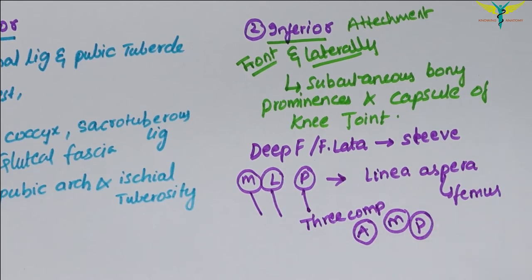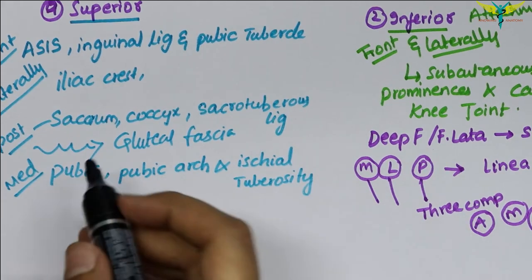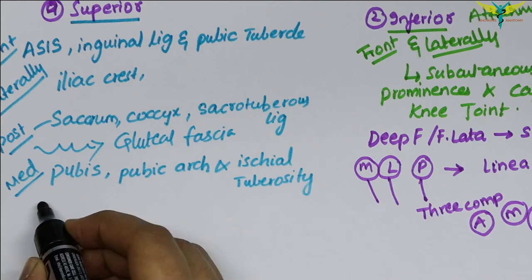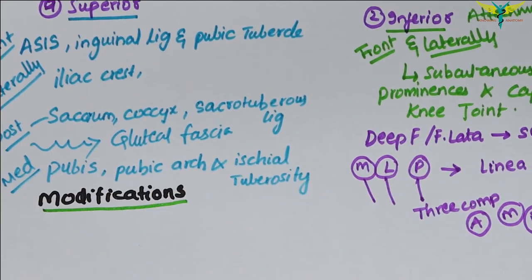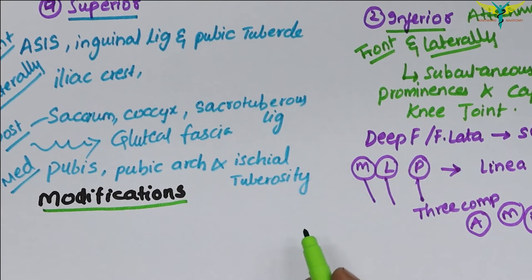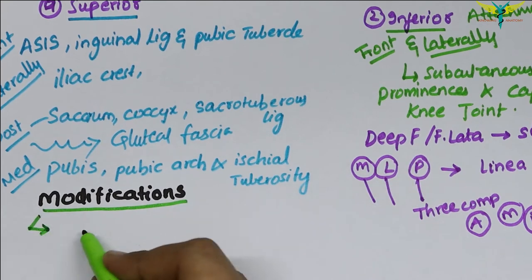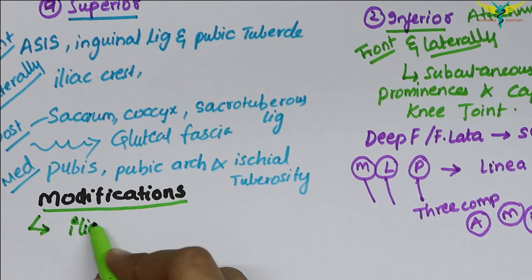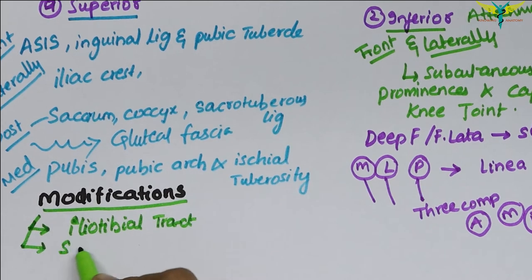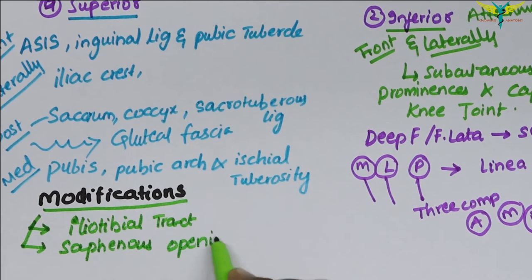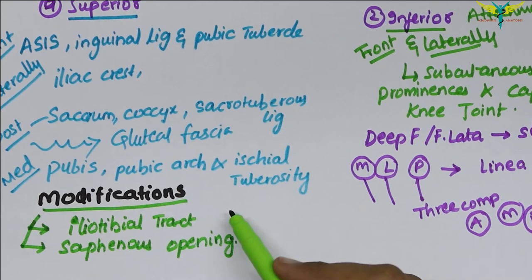Now let's talk about the modifications of the deep fascia. The fascia lata of the thigh presents two modifications: the iliotibial tract and the saphenous opening.